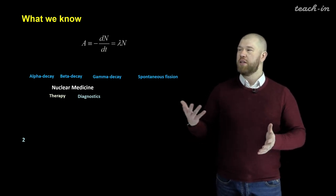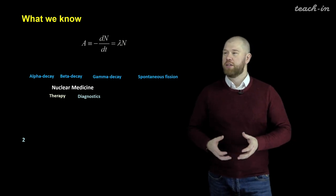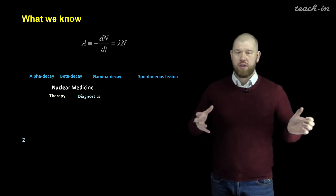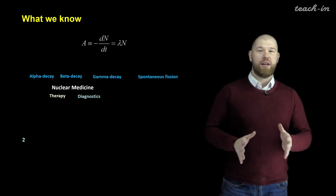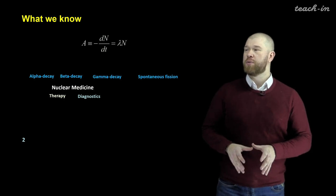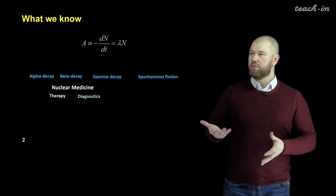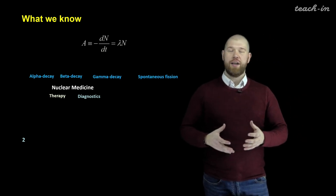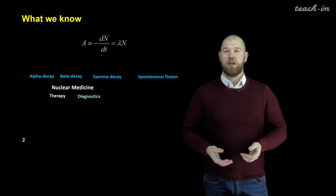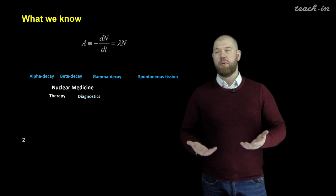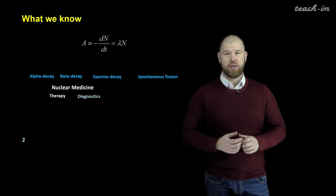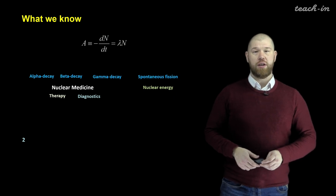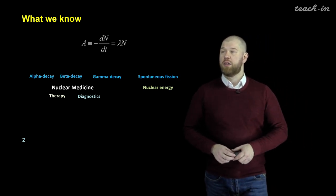The reason for these different applications is that the various types of released radiation have absolutely different properties. Alpha and beta particles are absorbed completely by the human body, so all their energy can be used for killing bad cells and tissues. Gamma rays and the gamma rays formed due to annihilation of beta-plus particles have very high penetration ability, allowing them to exit the body so we can detect the location and quantity of the radionuclide. Spontaneous fission can be used for nuclear energy production in nuclear power plants.